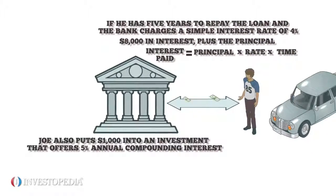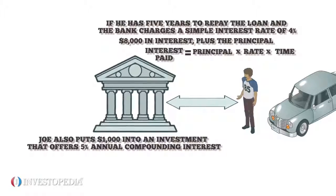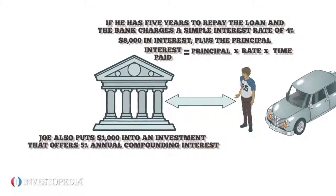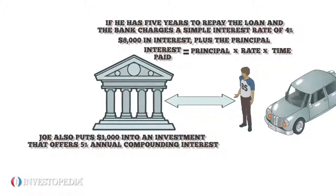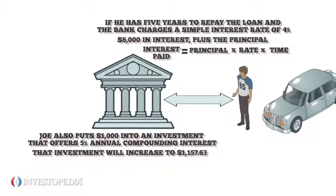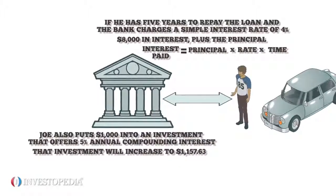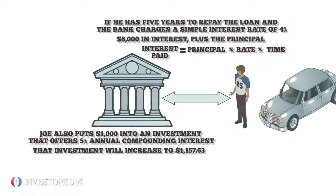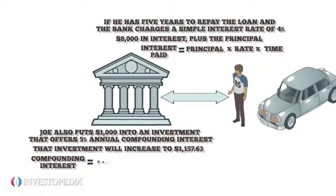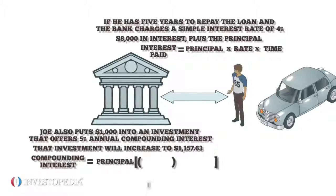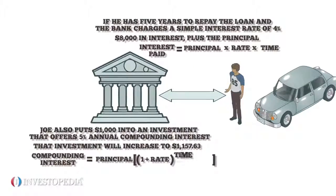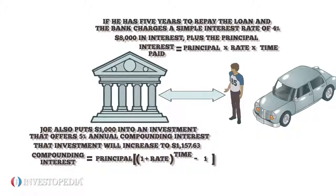Joe also puts $1,000 into an investment that offers 5% annual compounding interest. After three years, that investment will increase to $1,157.63 thanks to the power of compounding interest. To calculate the compounding interest, multiply the principal amount by one plus the annual interest rate, raised to the number of compound periods, minus one.